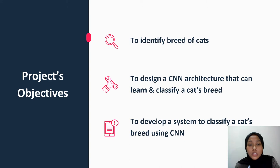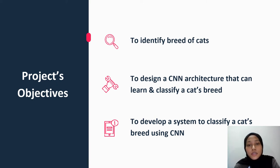Now for the objectives of this project: first is to identify the breed of cats; secondly, to design a CNN architecture that can learn and classify cat breeds; and lastly, to develop a system to classify cat breeds using CNN.